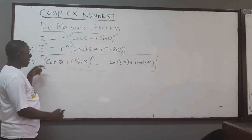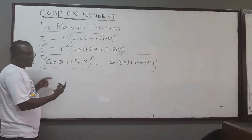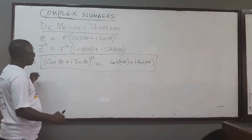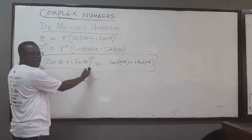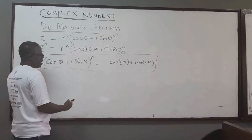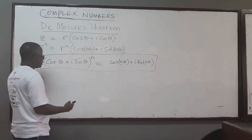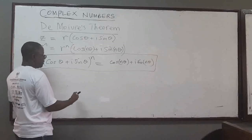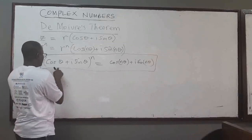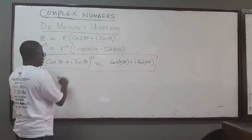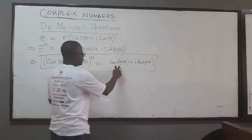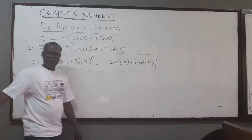This implies that if I have a complex number in polar form and I raise it to the power n, I don't need to expand this. I can basically find the result by multiplying the argument of the cosine and sine functions by n, and I get cos(nθ) + i·sin(nθ).